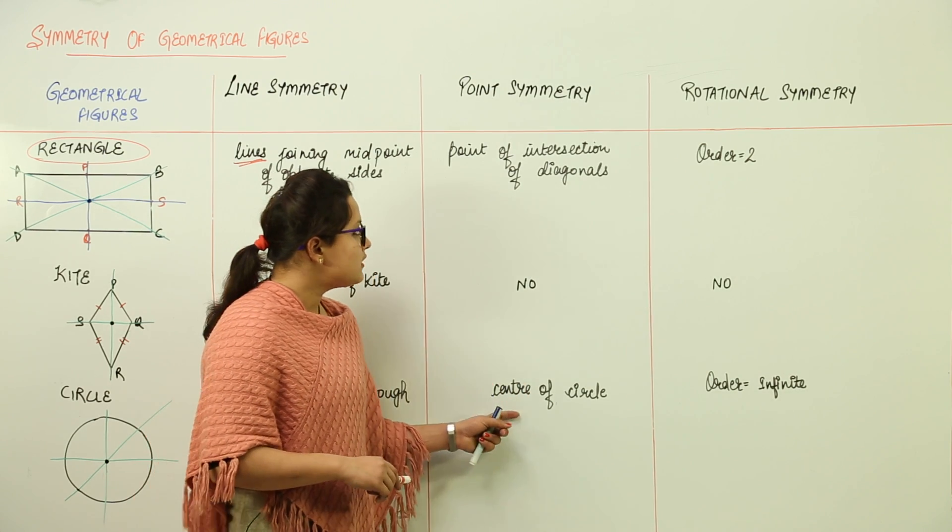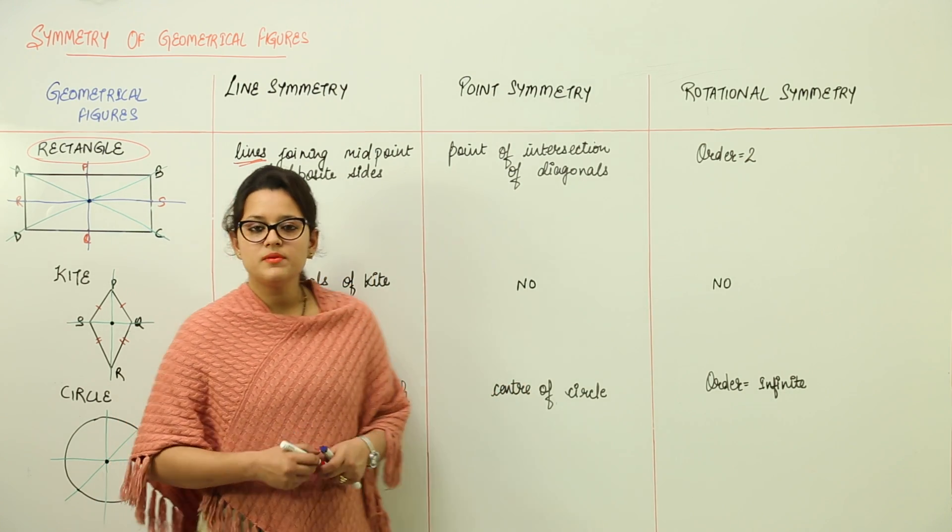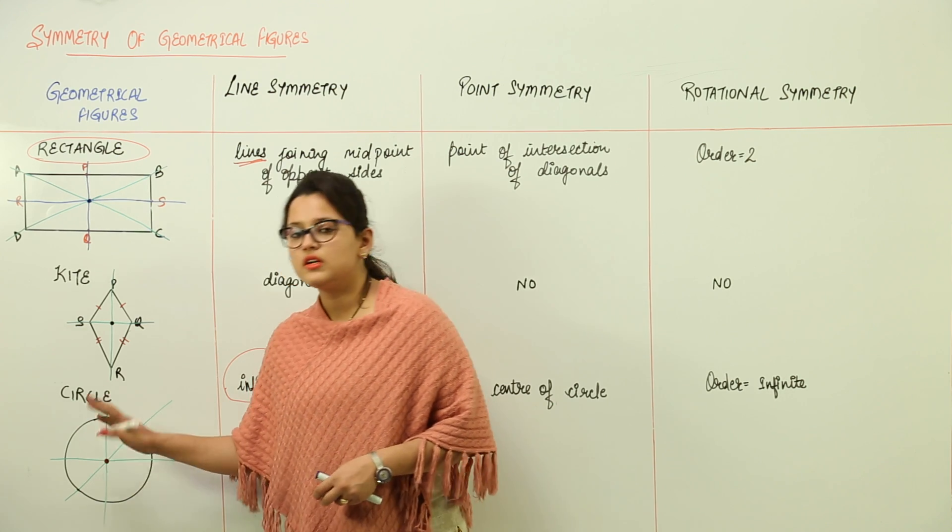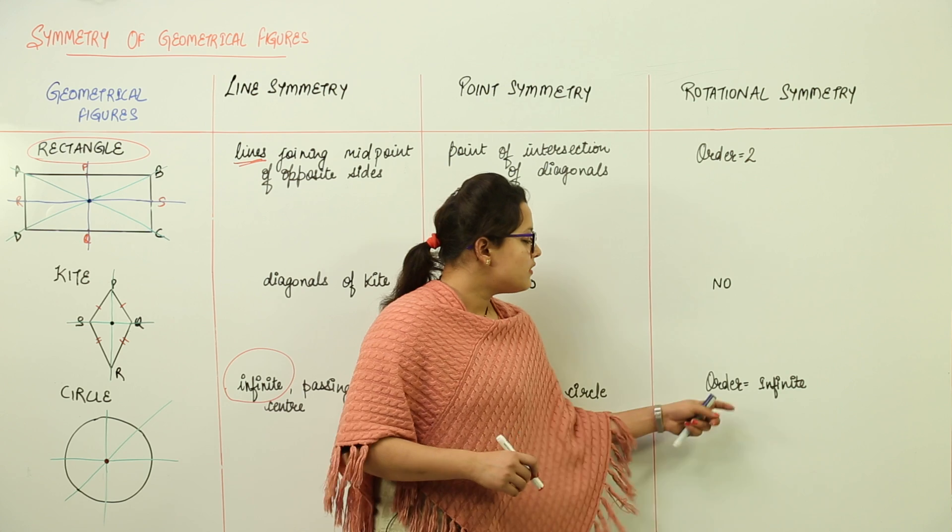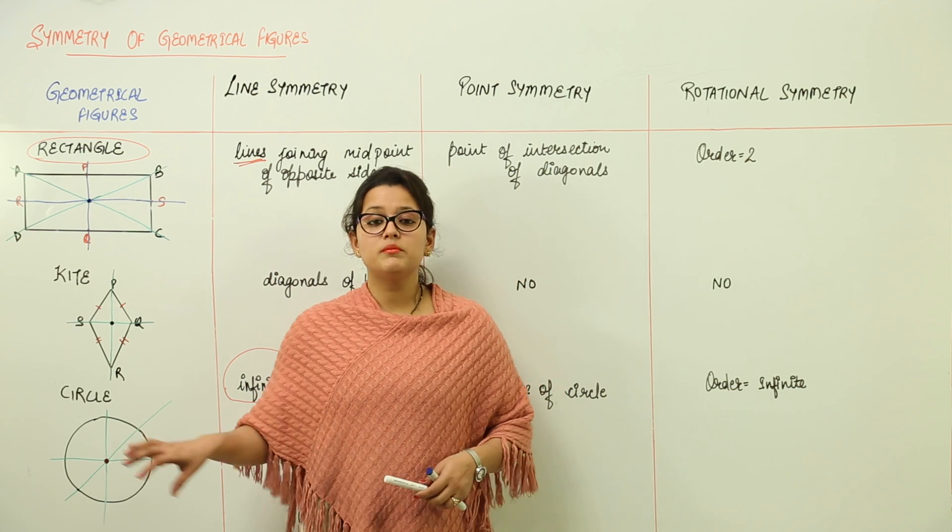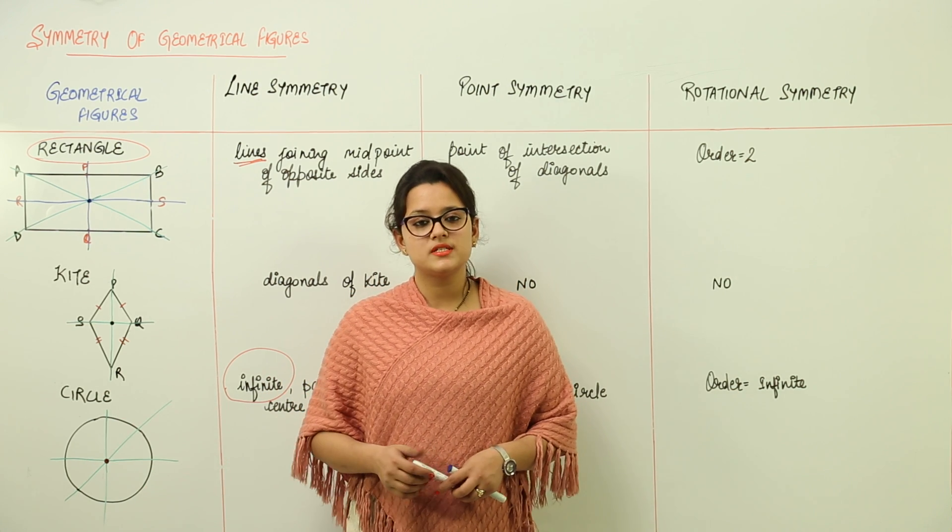We have center of the circle as the point symmetry. This is the point about which circle will be rotated and how much is the rotational symmetry? We have the order as infinite. It can be rotated infinite times to come back to its original state.